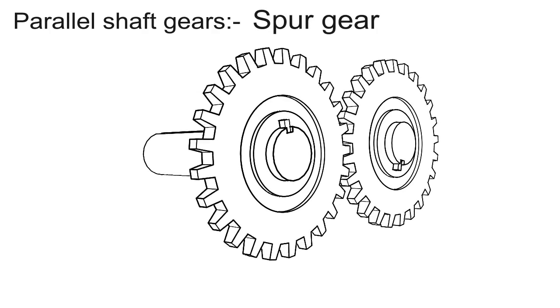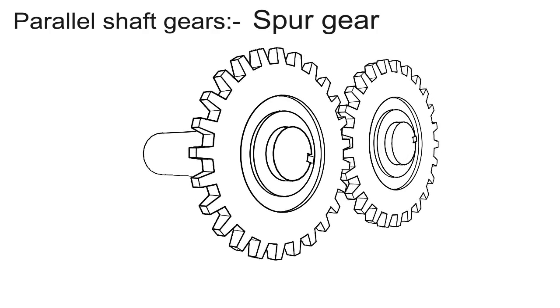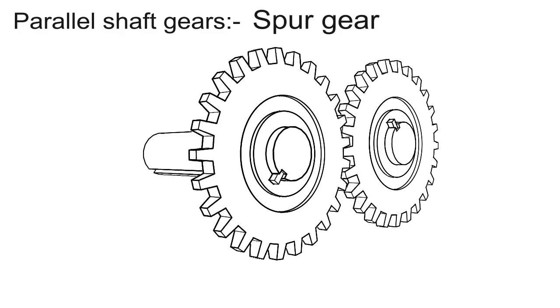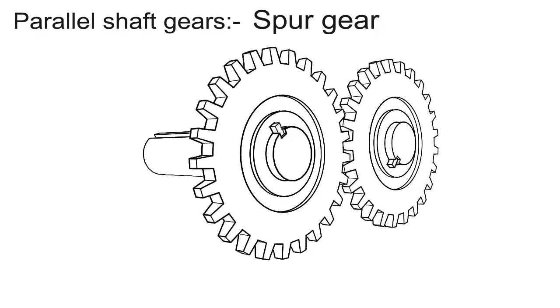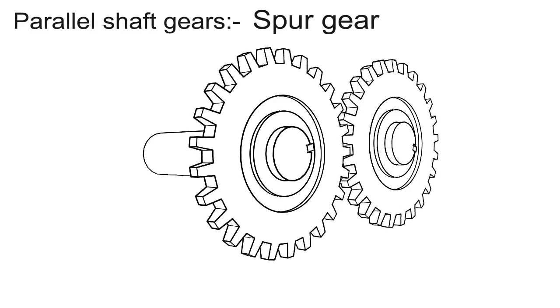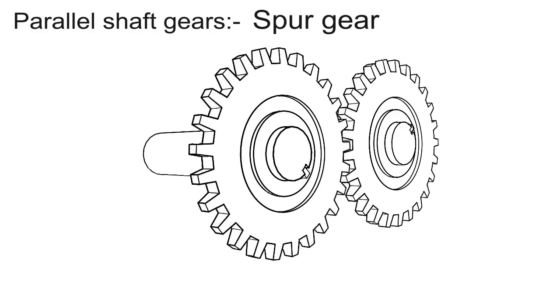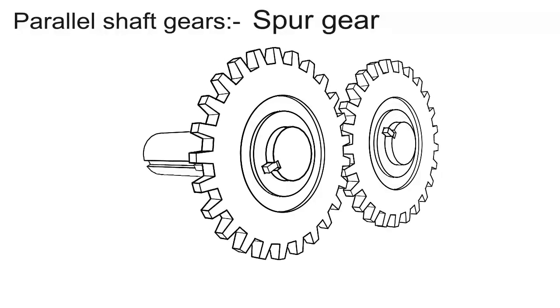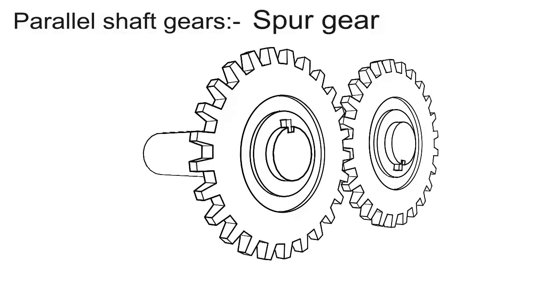Now we are going towards the brief description of gears. Parallel shaft gear — first one is spur gear. Spur gears have straight teeth, parallel to the axis, and thus they are not subjected to axial thrust due to the tooth load. When a direction change between the two shafts is required, spur gears cannot be used.